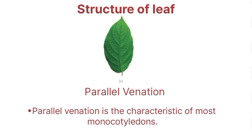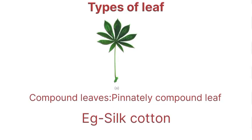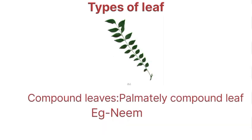Monocotyledons have parallel venation. Next, compound leaves: pinnately compound leaf — example is silk cotton. Next is palmately compound leaf — example is neem.